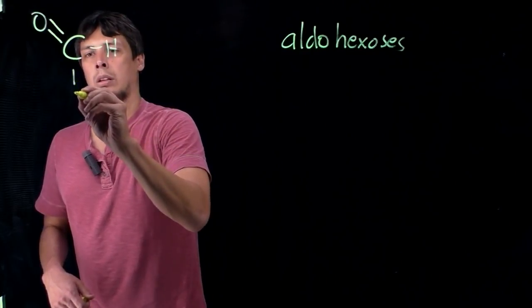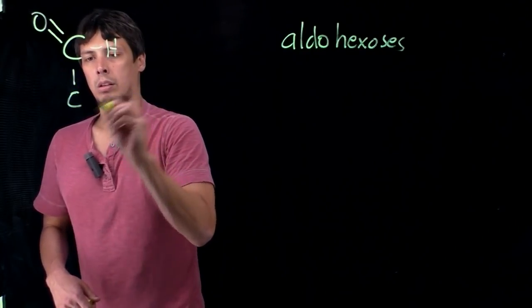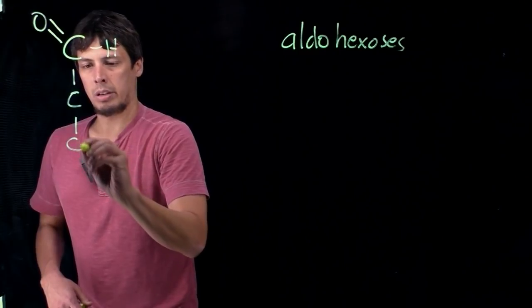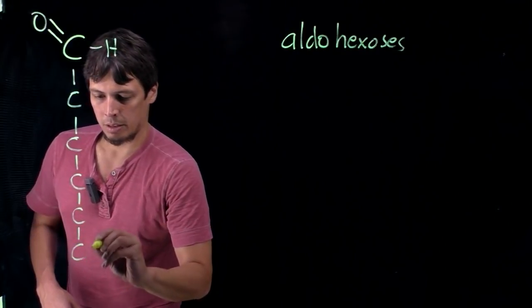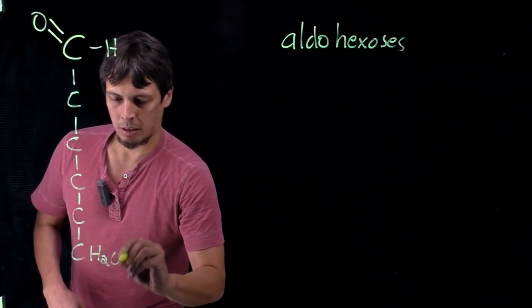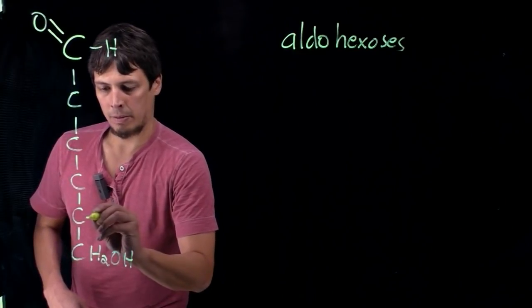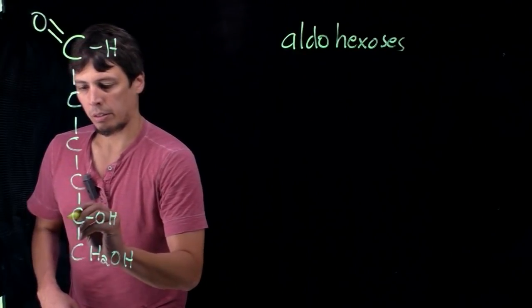So one, two, three, four, five, six, and then we draw these all as Fischer projections.